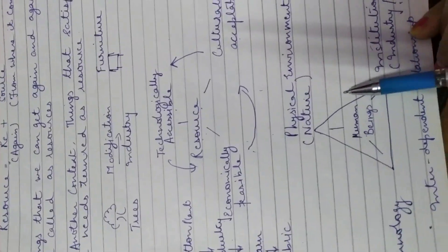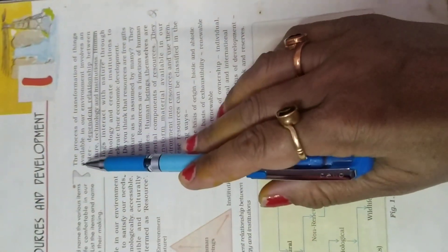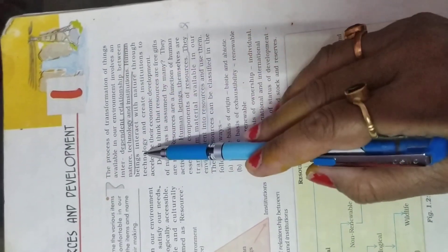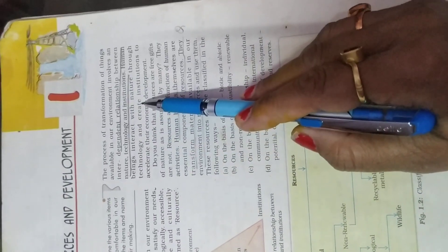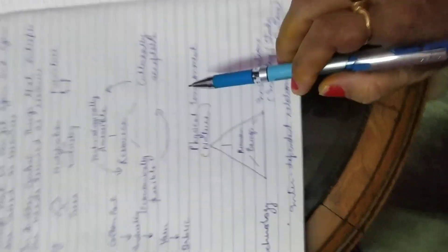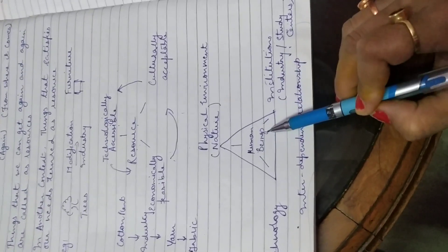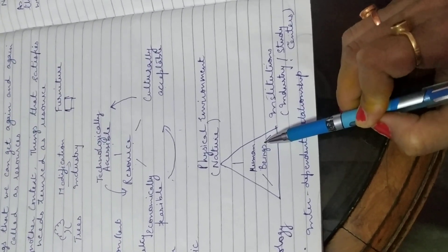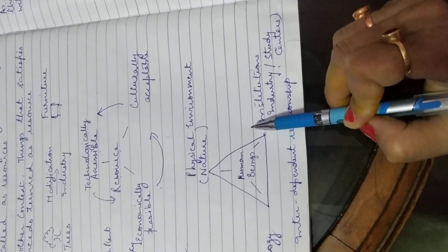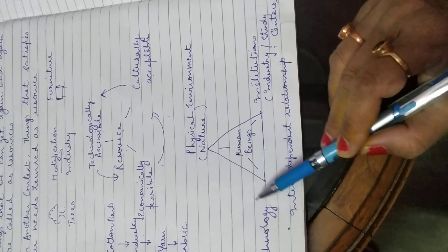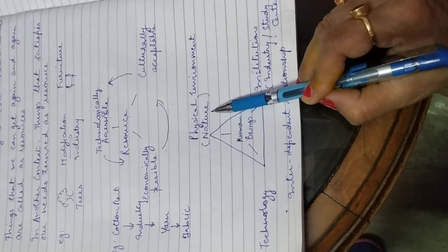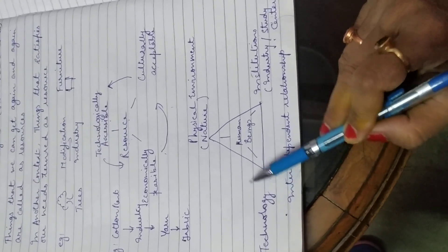The purpose of transformation of things available in the environment involves an interdependent relationship between nature, technology and institutions. Human beings interact with nature through technology and create institutions to accelerate their economic development. Three things are important: physical environment, technology, and institutions. Human beings are the most important resource because we have the capability of changing an unused thing into a usable form, and we do this with the help of institutions, nature and technology.